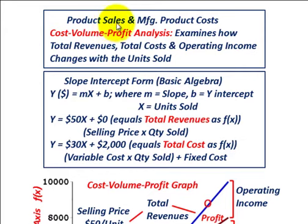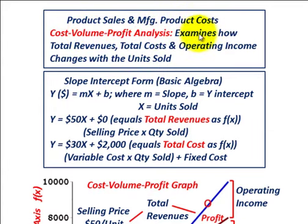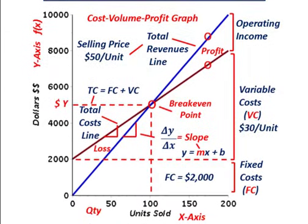What we're going to be going over here is product sales in manufacturing, product costs, and we're going to do it in terms of what they call the cost-volume-profit analysis. This is where we're going to examine how total revenues, total costs, and operating income change with units sold.